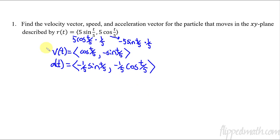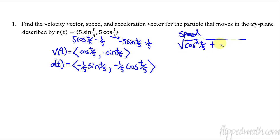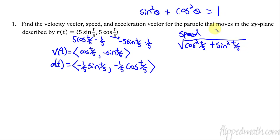Now let's find speed. Speed is the square root of the velocity components squared. So we have cosine squared of t/5 plus sine squared of t/5. Remember: you don't square the t/5 part — that's inside the sine or cosine. Now, sine squared theta plus cosine squared theta equals 1 — that's the Pythagorean identity. So this is just the square root of 1, and therefore the speed is 1.